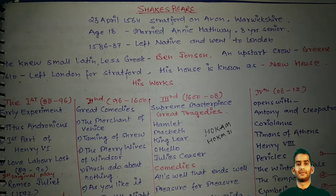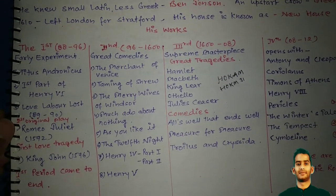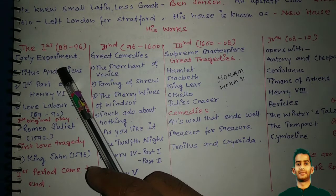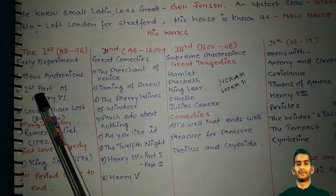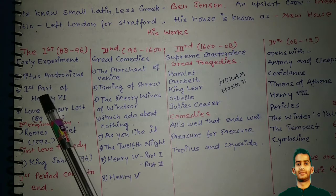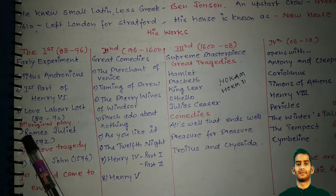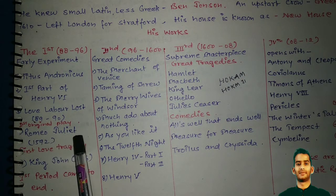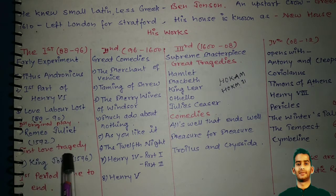His works are divided into four phases. The first phase is between 1588 to 1596. These were his early experiments. Some works from this phase include Titus Andronicus, the first part of Henry VI, Love's Labour's Lost, and Romeo and Juliet in 1592, which is considered the first love tragedy.